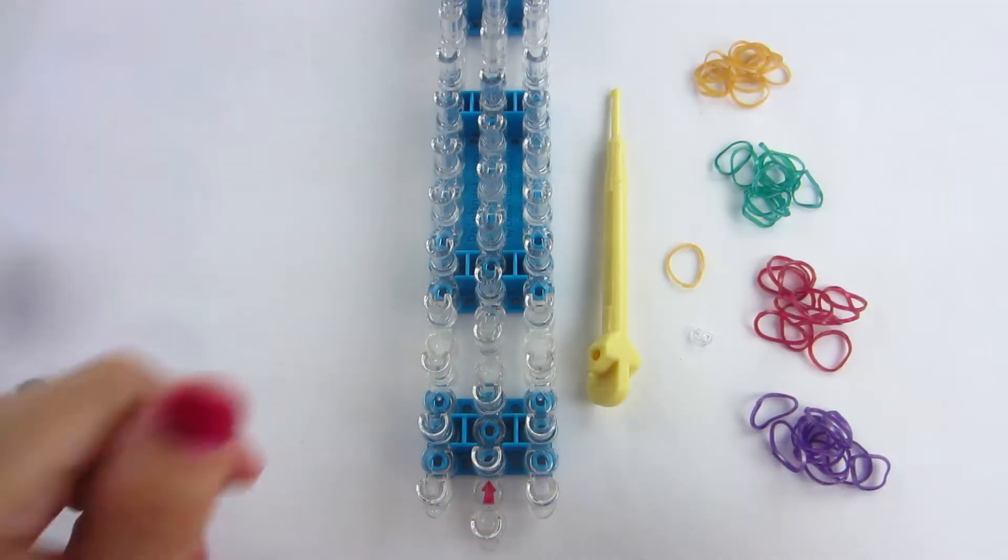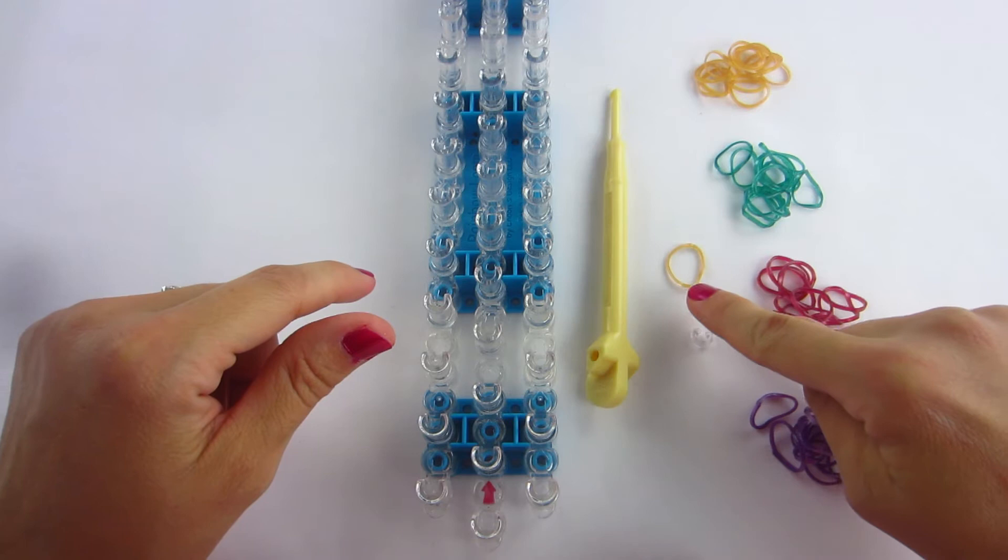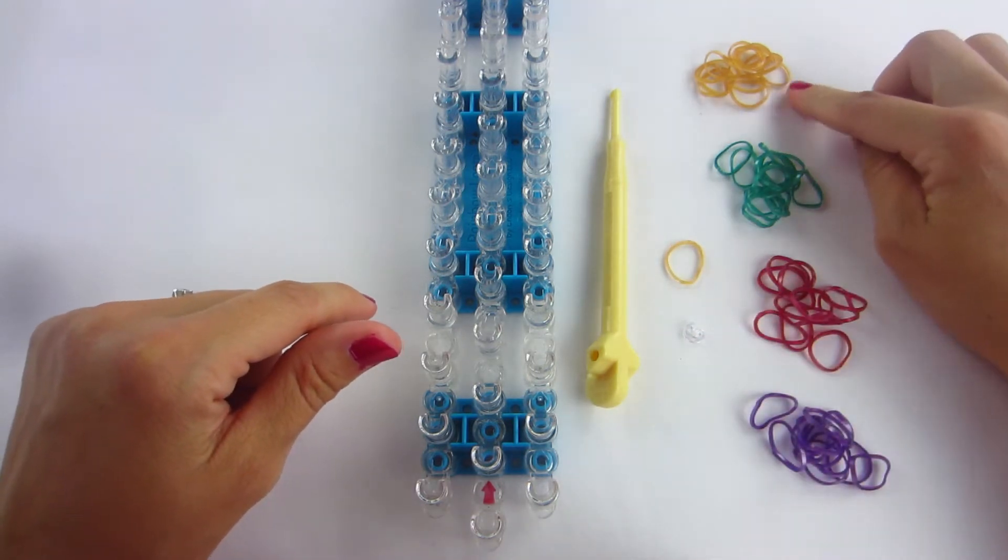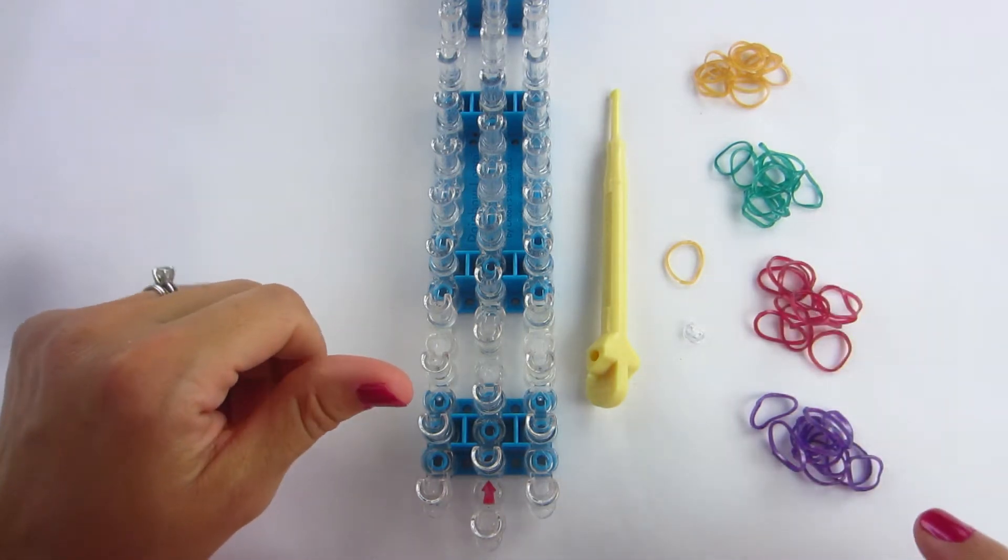For this bracelet you will need one loom, one hook, one gold finishing band, one C-clip, 12 gold bands, 12 green bands, 12 red bands, and 12 purple bands.